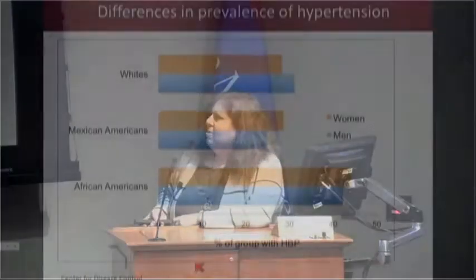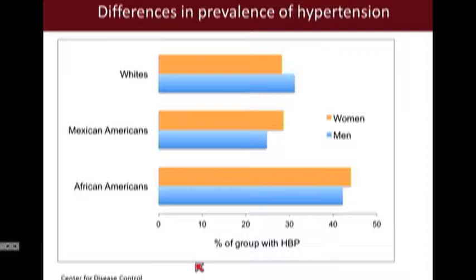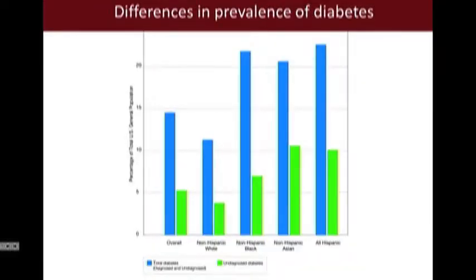But what about complex diseases? Complex diseases are caused by multiple genes together with health and environment. An example is hypertension, which is more prevalent in people of African descent in the US. If we look at the prevalence of diabetes, another complex disorder, we can see that it's most prevalent in Hispanic populations and also in African-Americans and Asian-Americans, relative to people of European descent.